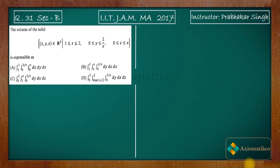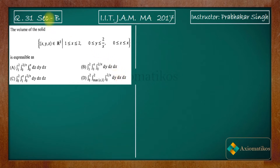We have a solid and we are trying to find out its volume. We have four options, and the difference between these four options is the order of integration. We have dz dy dx, then dy dx dz, and so on — different orders of the integral.